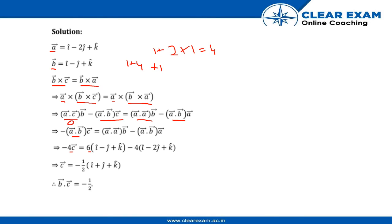We have b = i cap minus j cap plus k cap, and a dot b equals 4, and vector a = i cap minus 2 j cap plus k cap. Moving minus 4 to the right-hand side and evaluating further, we finally get c vector = minus 1/2 i cap plus j cap plus k cap.